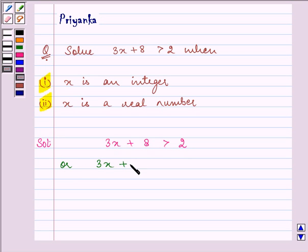Let us subtract 8 on both the sides. These two will get cancelled out. We are left with 3x is greater than minus 6.